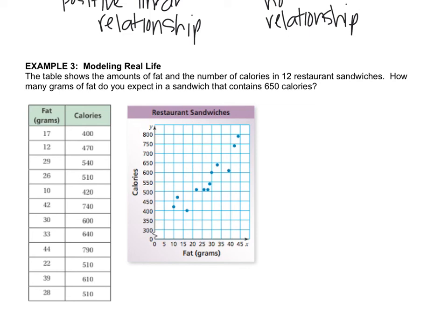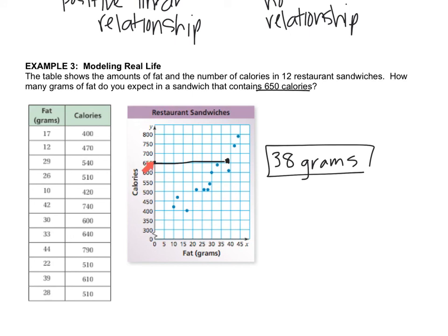We need to predict how many grams of fat are in a sandwich with 650 calories. We go to where 650 is on the x-axis and drag it across to where the dots are. Based on that, I would say about 38 or 39 grams of fat — it's just a prediction and you could be off by one or two. I'll go with 38 grams.